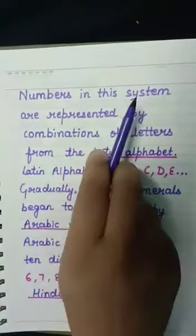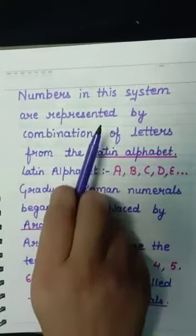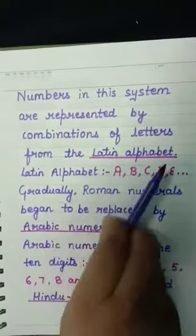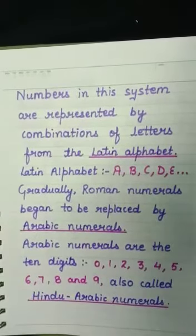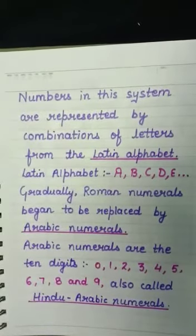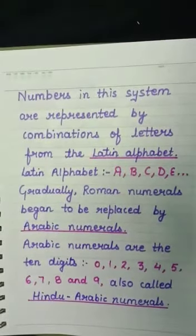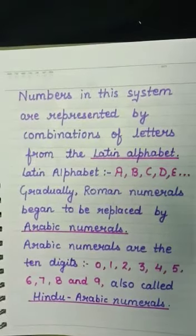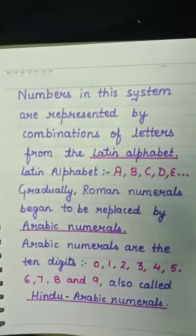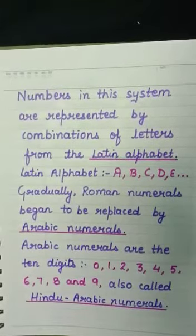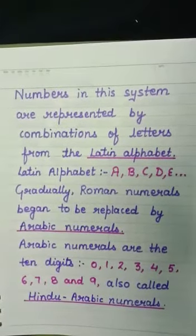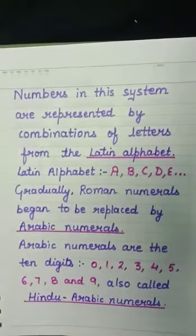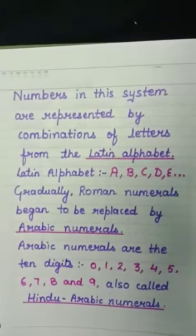Numbers in this system are represented by combinations of letters from the Latin alphabet. Roman numeral system में जितने भी numbers हैं, जब हम उन्हें represent करते हैं या लिखते हैं, तो उनमें जो letters used हैं, वो Latin alphabet से लिए गए हैं। Latin alphabet means जो भी हम English alphabets use करते हैं — जैसे A, B, C, D, E and so on — इन्हीं में से Roman numeral के symbols को भी लिया गया है।